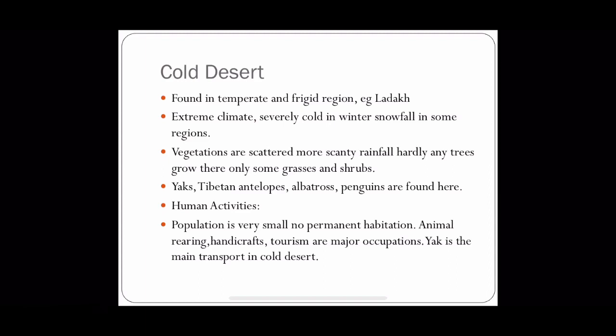Cold deserts have an extreme climate. During summer, the days are warm and the nights are cool. It is severely cold in winter, and some regions experience heavy snowfall. Natural vegetation is scattered and even more scanty than in hot deserts.